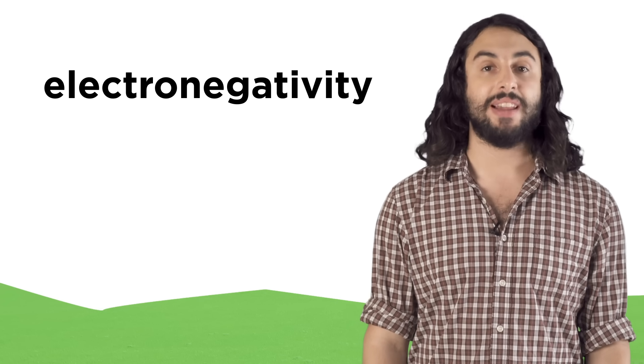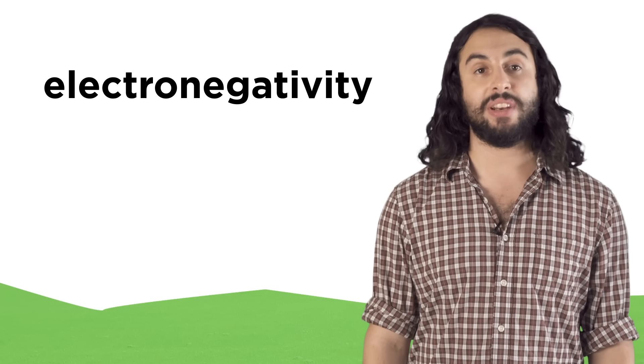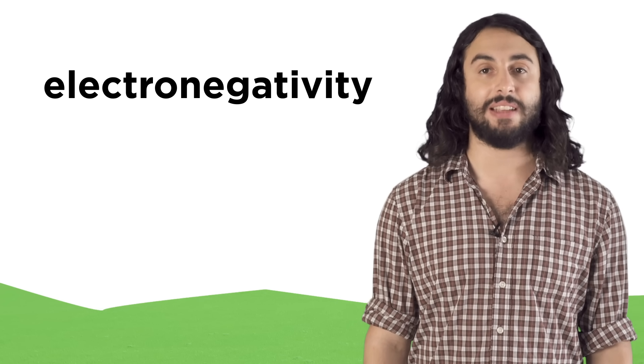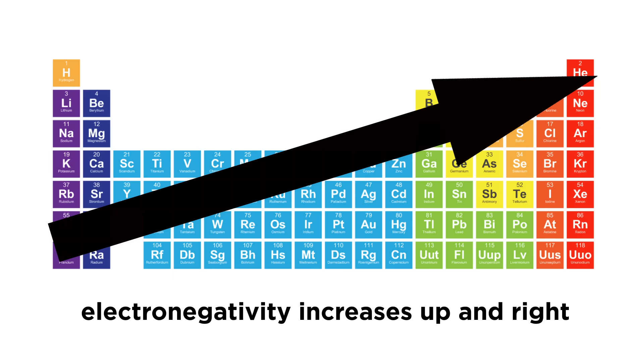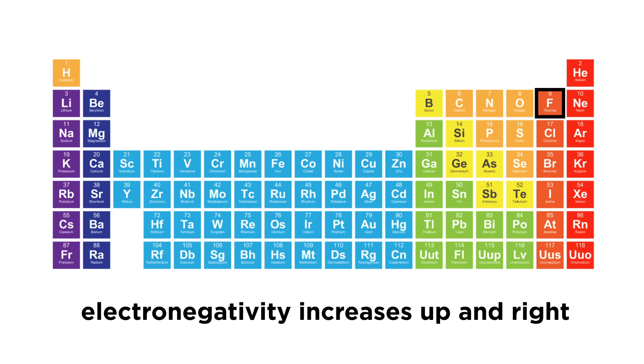Lastly we want to look at electronegativity. This is the ability of an atom to hold electrons tightly. It will increase this way because a smaller atom like fluorine with more protons for its energy level, or a higher effective nuclear charge, will hold electrons best. Again we will disregard the noble gases for this trend. Electronegativity will be important in the next clip where we learn about chemical bonds.